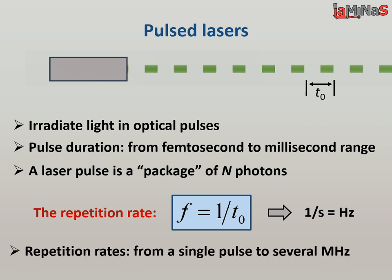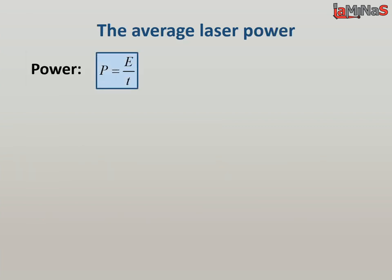Typically, the repetition rates go from a single pulse to several megahertz. Power is the measure for the flow of energy. Its unit is 1 joule per second, which we call watt.